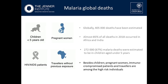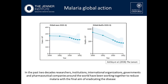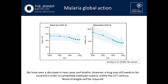Malaria kills a child under the age of five every two minutes. Among others at risk of severe malaria are pregnant women, immunocompromised patients, and travellers. Despite this, international researchers, institutions, organisations, governments, and pharmaceutical companies are working hard to tackle, eliminate, and eradicate malaria. From 2000 to 2015, both cases and deaths have been decreasing over time. However, if we want to completely eliminate this disease within the 21st century, novel strategies will be required.